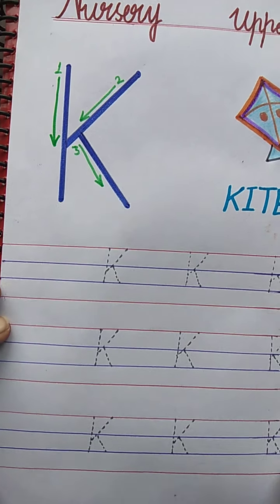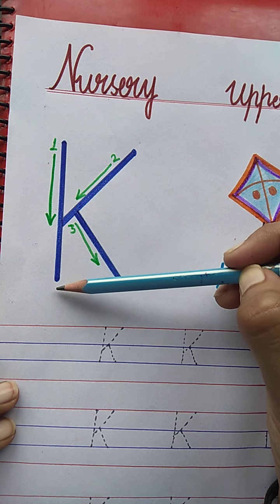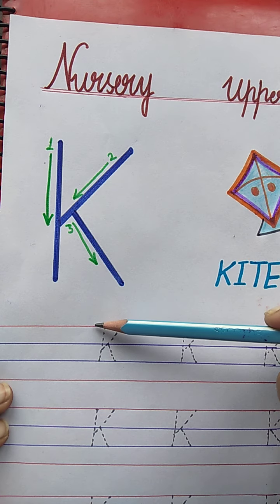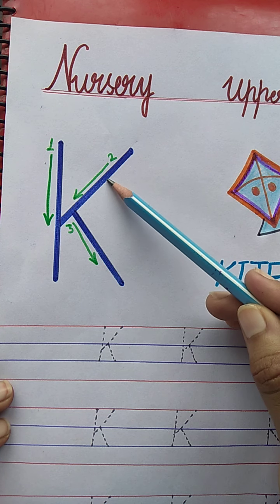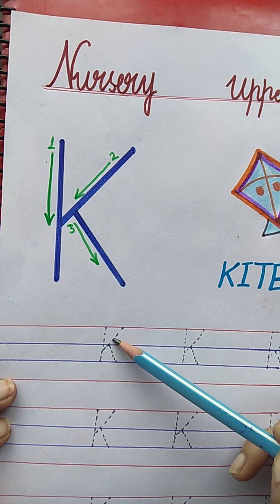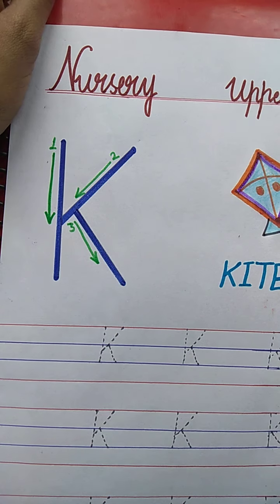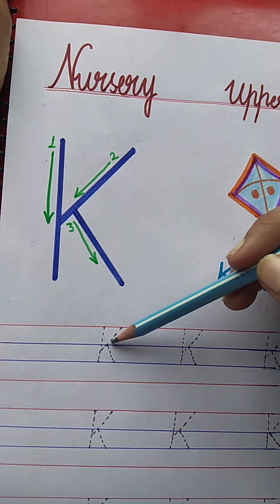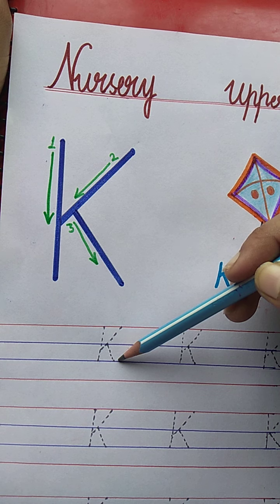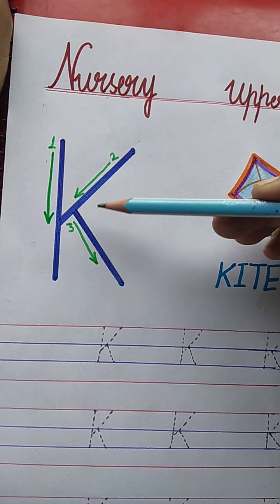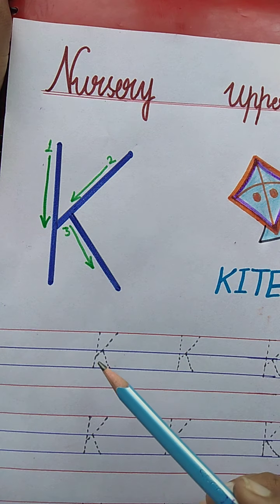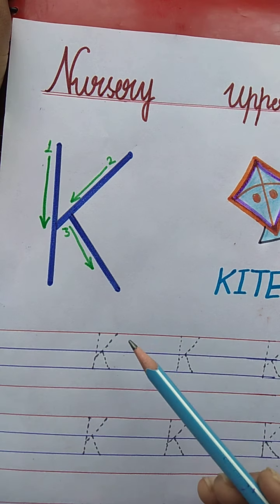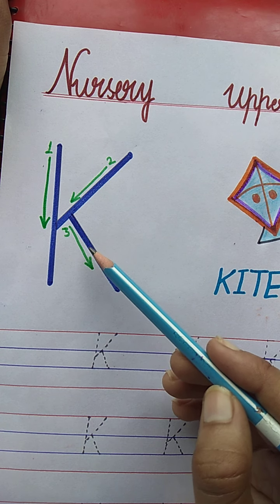The formation of K is here. See here the lines. The first line, you have to draw a standing line like this — from the red line to the second blue line. Red line se lekar second blue line tek aapko ye standing line banani hai. Then the second line, you have to draw a slanting line. Slanting line banani hai. Then the third line, you have to draw a slanting line down to the second blue line. So: first line is standing line, second is slanting line, and third is also a slanting line.